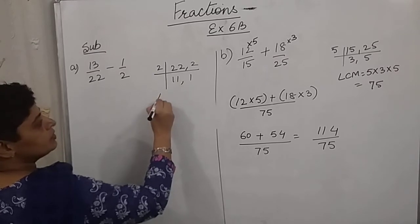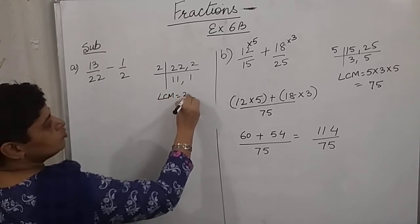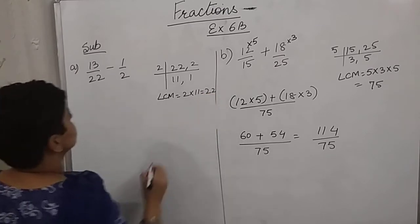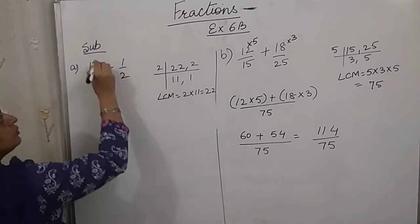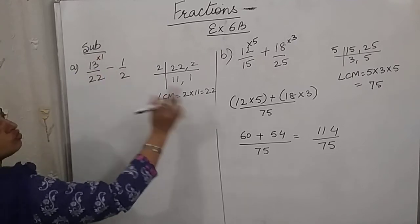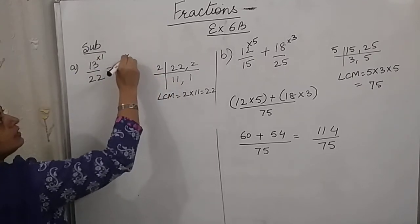So LCM is 2 into 11, which becomes 22. So 22 should be multiplied by which number to get 22? 1. 2 should be multiplied by which number to get 22? 11.